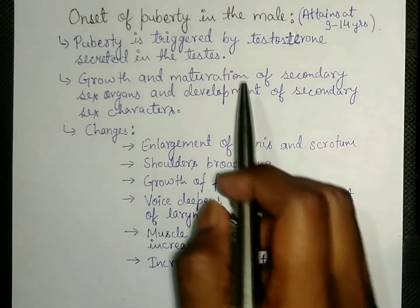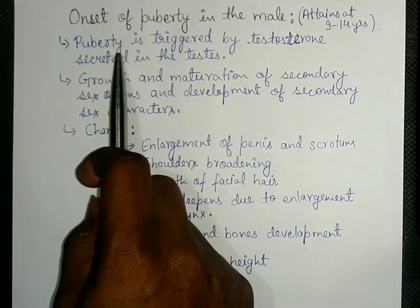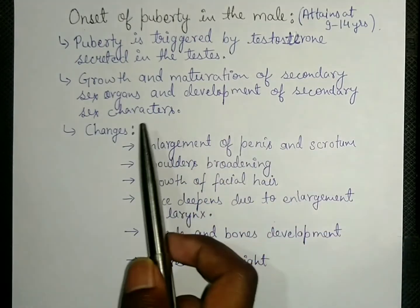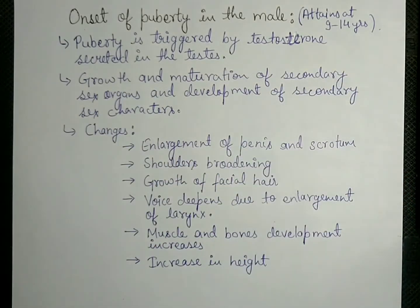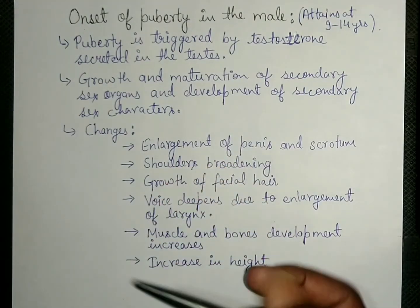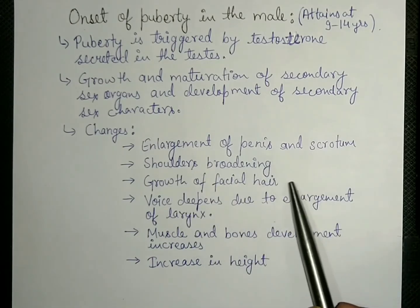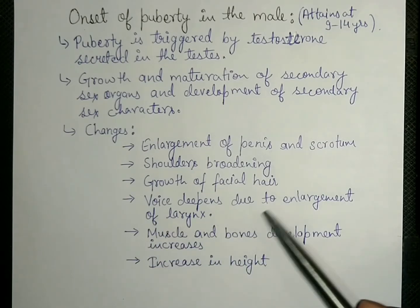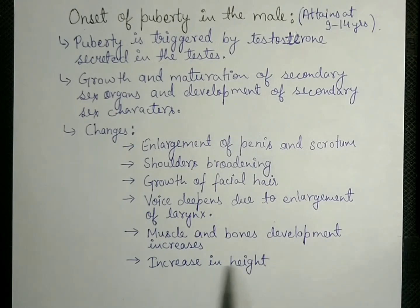Testosterone is secreted by the testes and is responsible for puberty, which occurs in males from 9 to 14 years of age. During puberty there is growth and maturation of secondary sex organs and development of secondary sex characters. These include enlargement of the penis and scrotum, broad shoulders, facial hair, deepening of voice due to enlargement of the larynx, appearance of the Adam's apple, and increased muscle, bone development, and height.